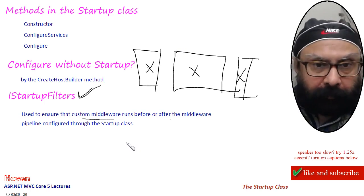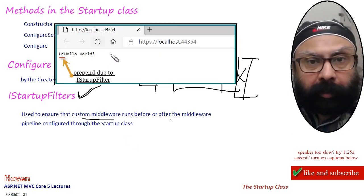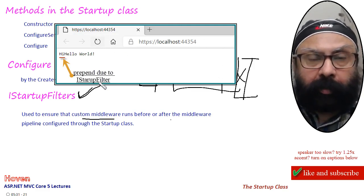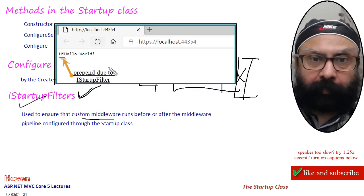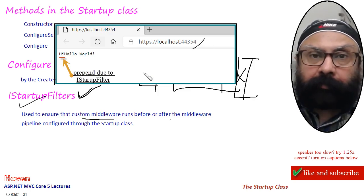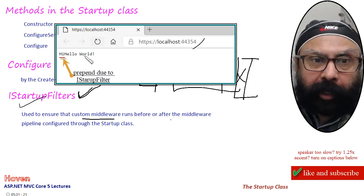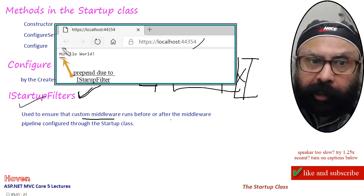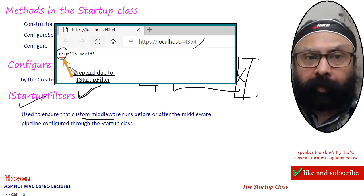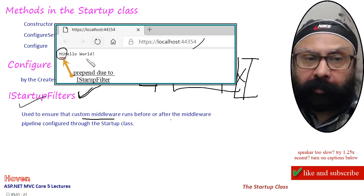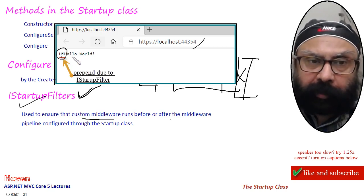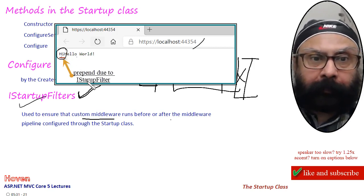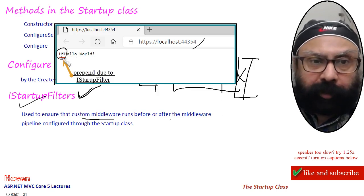Let me show an example. I added code for IStartup filters. The default request renders 'Hello World' on the screen. I wanted to put a 'Hi' before it, so that 'Hi' is printed first and then 'Hello World' is printed — this first code is processed first and then the second. We can do this by prepending an IStartup filter. This is the whole concept.